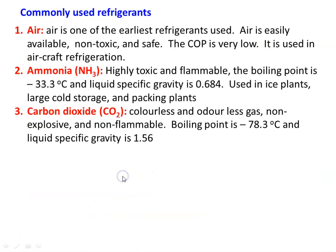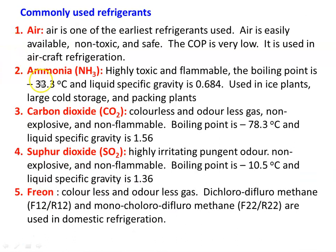The commonly used refrigerants are: air, ammonia, carbon dioxide, sulfur dioxide, and freon. In freon, we have Freon 12 (F12 or R12) and Freon 22 (F22 or R22), which are very popular refrigerants. Freon 12 is dichlorodifluoromethane, and Freon 22 is monochlorodifluoromethane. These are five important commonly used refrigerants in vapor compression or vapor absorption refrigeration systems. Thank you, we will meet again.